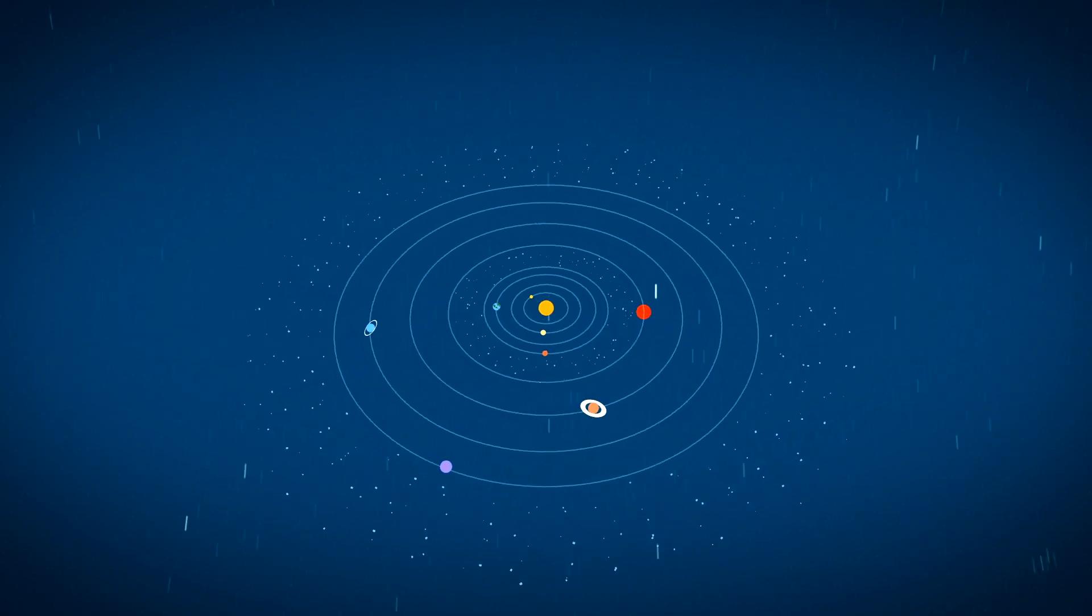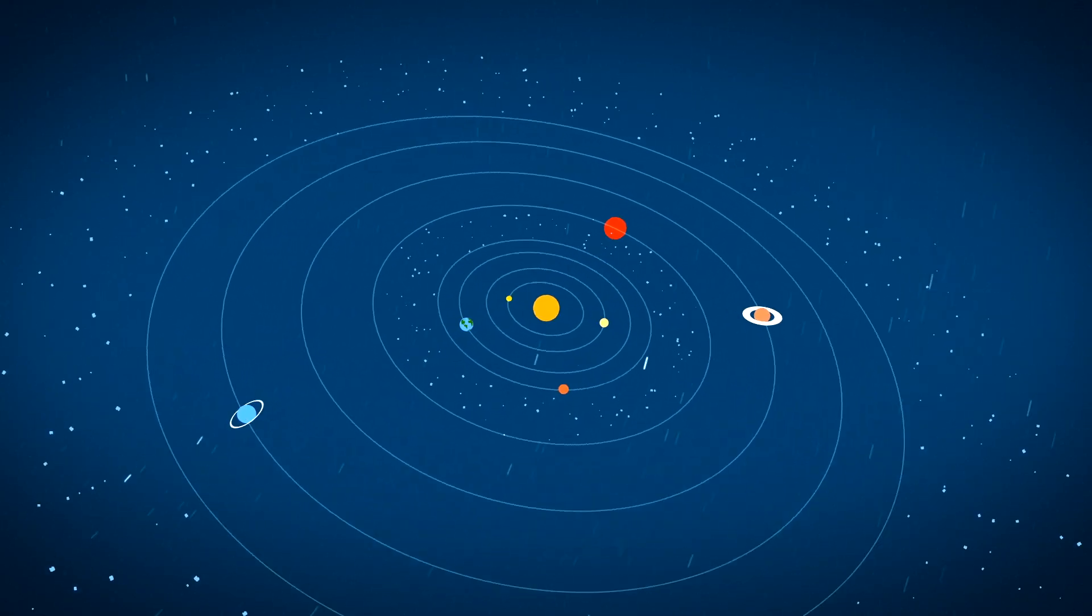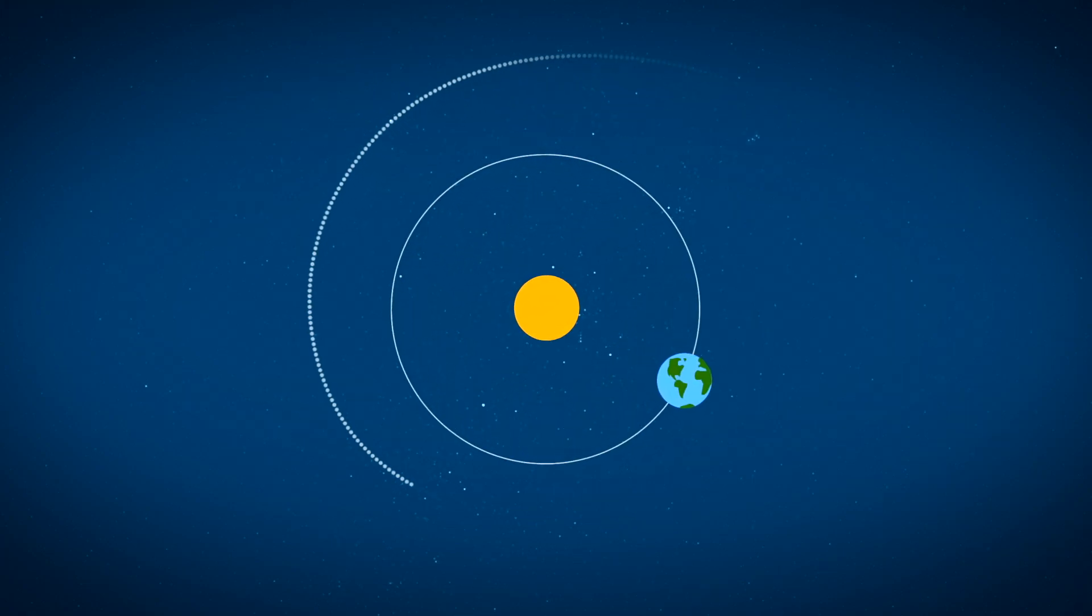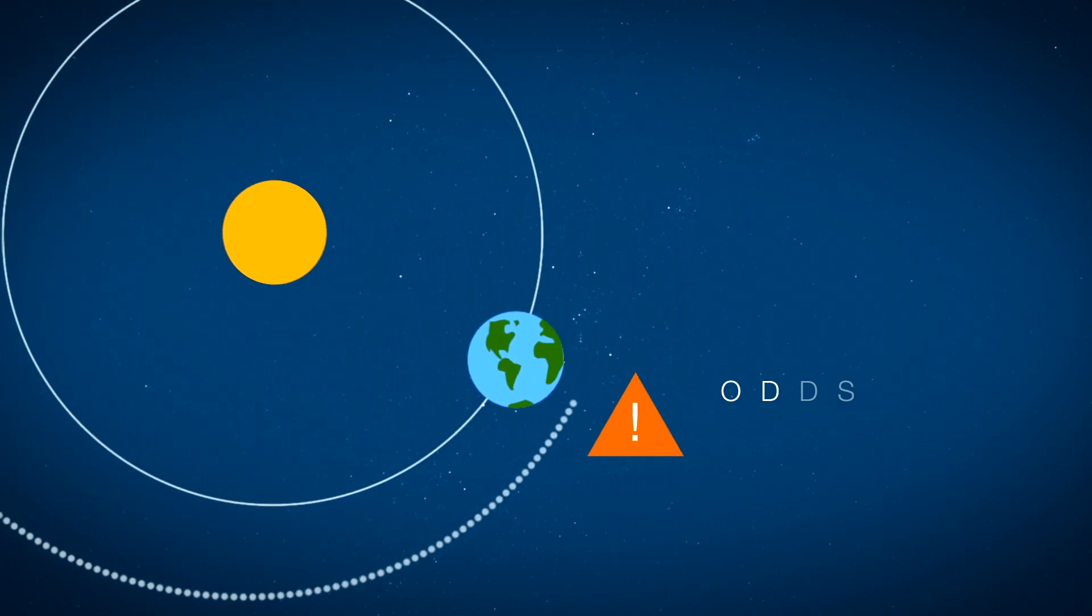Most other asteroids tend to stay grouped together in a few regions of our solar system, yet some still end up in our backyard. So once these asteroids get close, what makes the difference between a near miss and a potential hit?